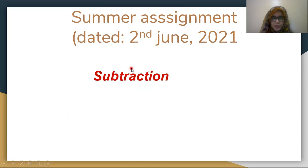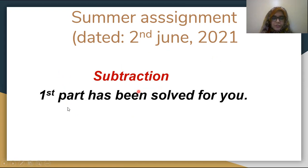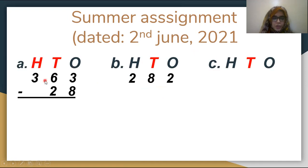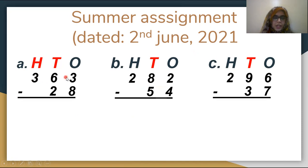This is your summer assignment dated 2 June 2021. The first part has already been solved for you. Now for parts A, B, and C — part A is 363 minus 28. Since 3 is smaller than 8, we need to borrow.